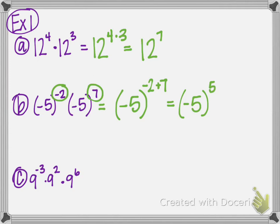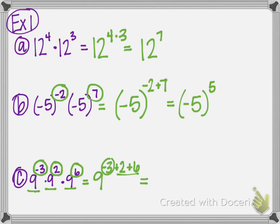One more — as long as they have the exact same base it's fine. Keep the base nine and add the exponents: negative three plus two plus six. Let's try to do it in our head: two plus six is eight, then negative three — take away three — that's five. So it's nine to the fifth power.